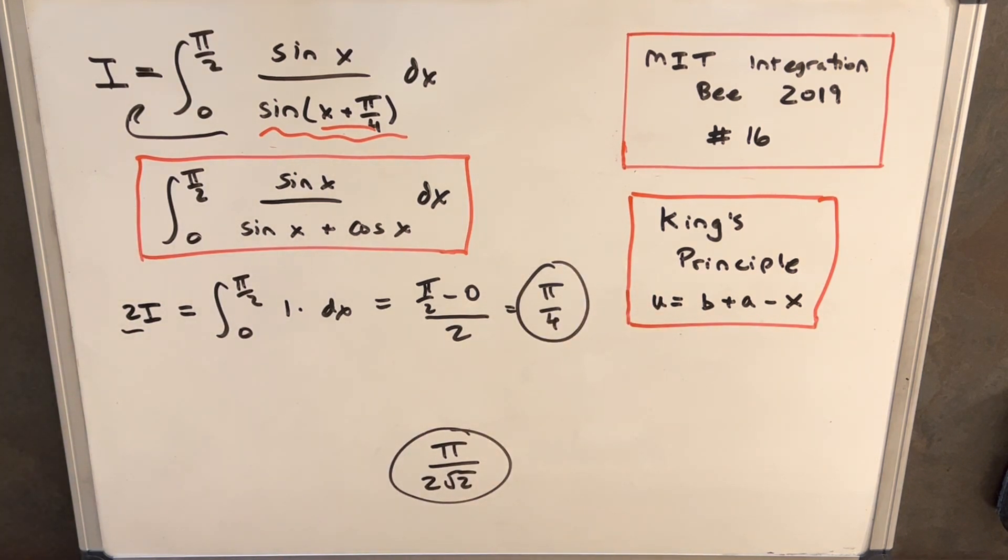So you can kind of look at it almost like a formula when you see this, and you can just plug in pi over 4. Again, there's some different variations. Sometimes it doesn't work, but basically that's how you cut a lot of time in this kind of problem. Okay, that was MIT Integration Bee 2019, problem number 16. Thanks for watching. Please like and subscribe, and have a good day.